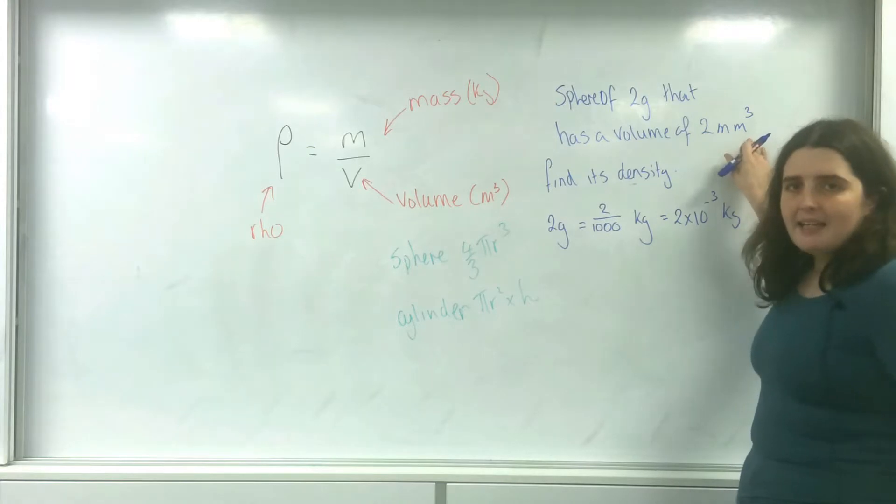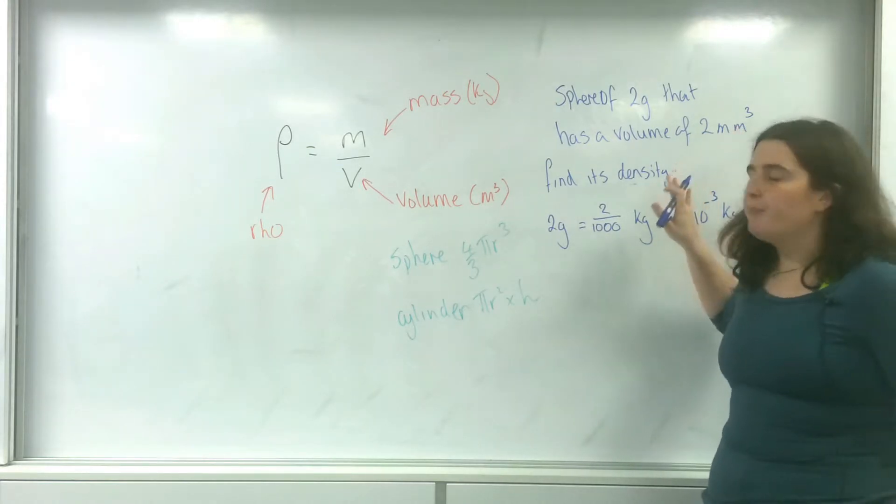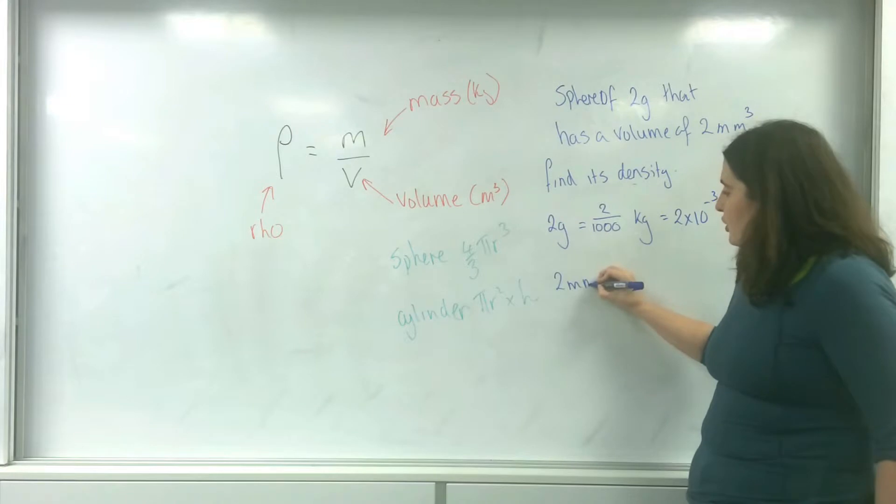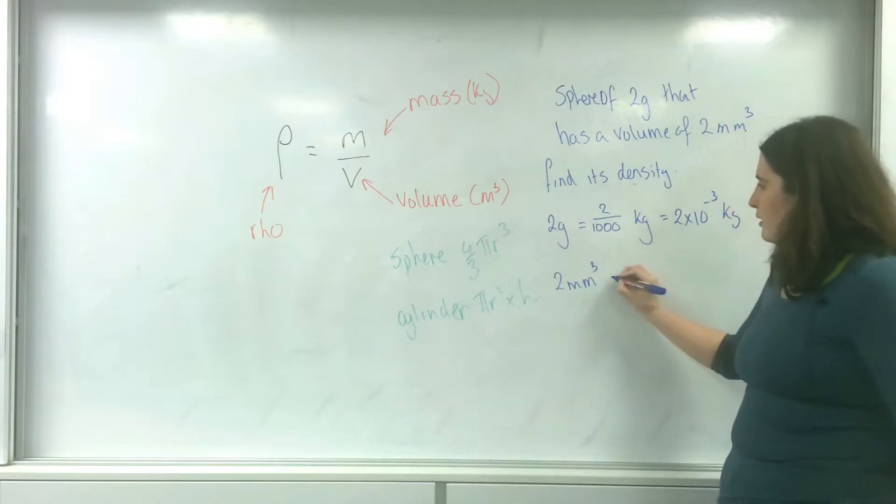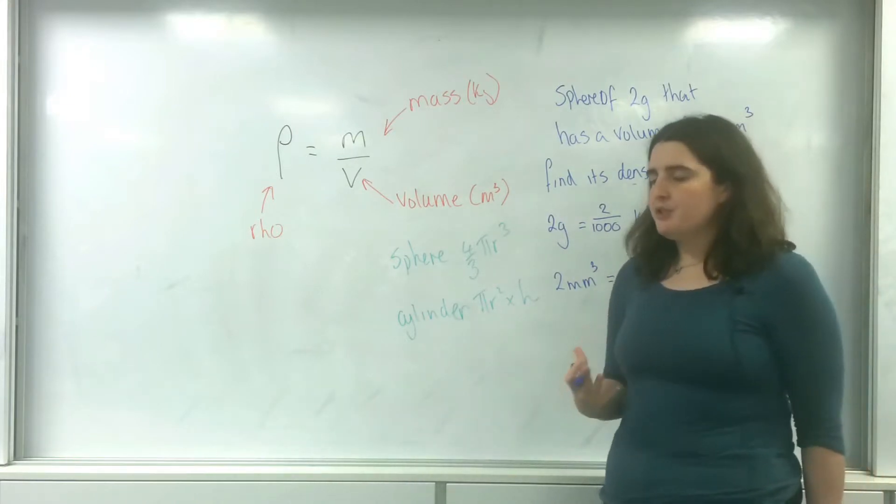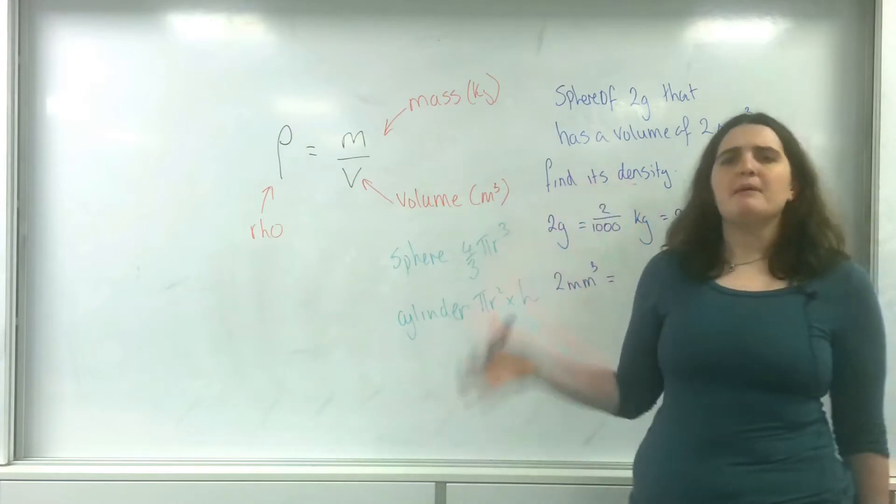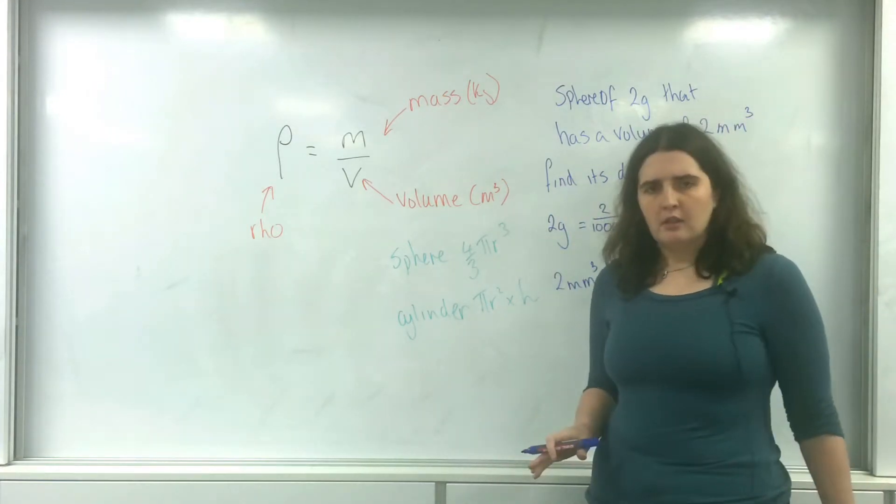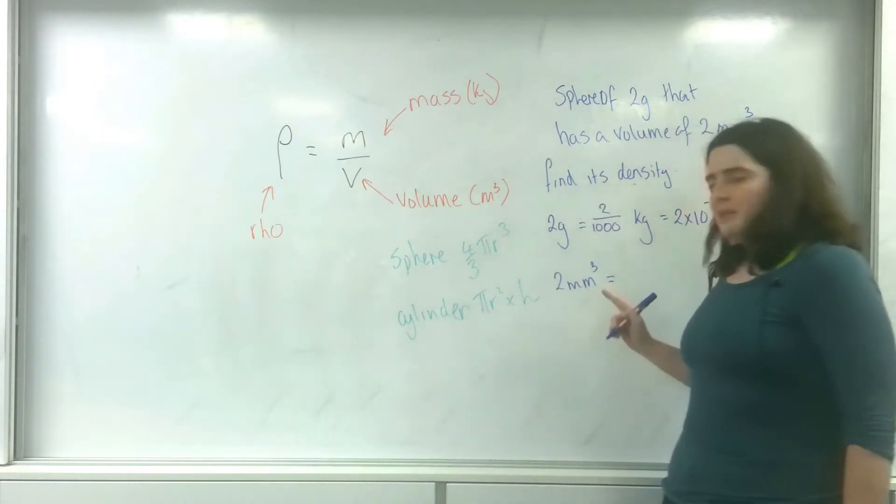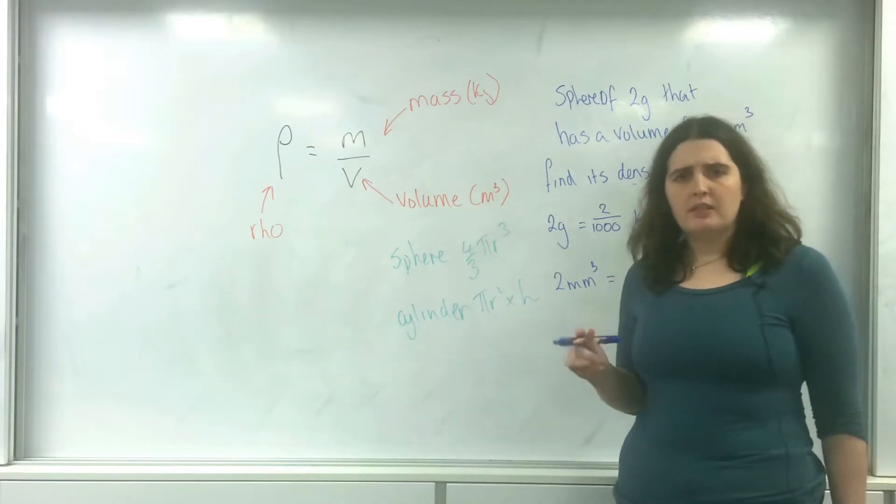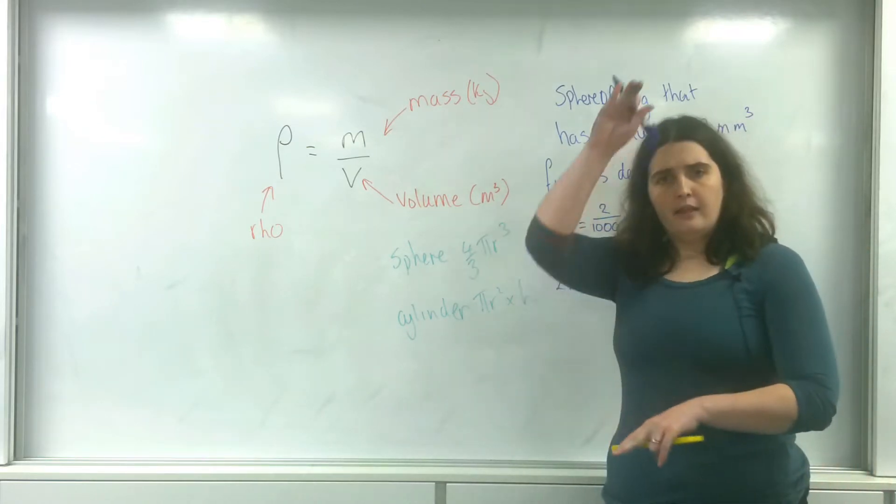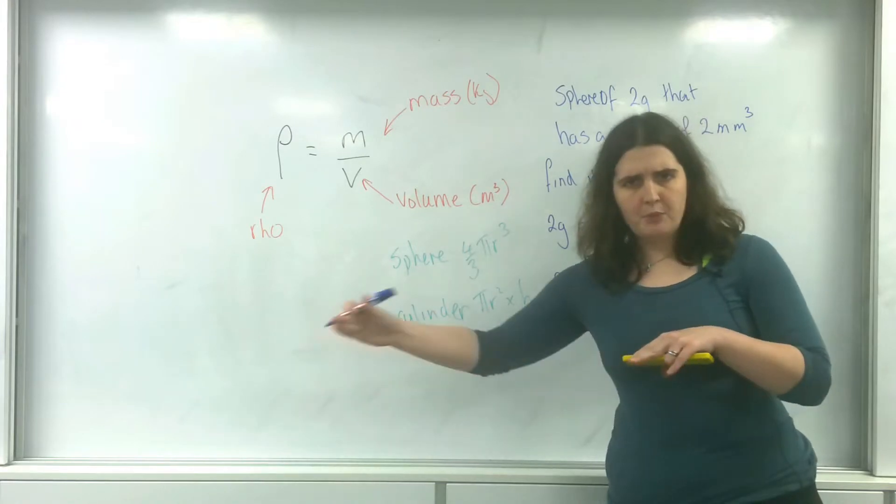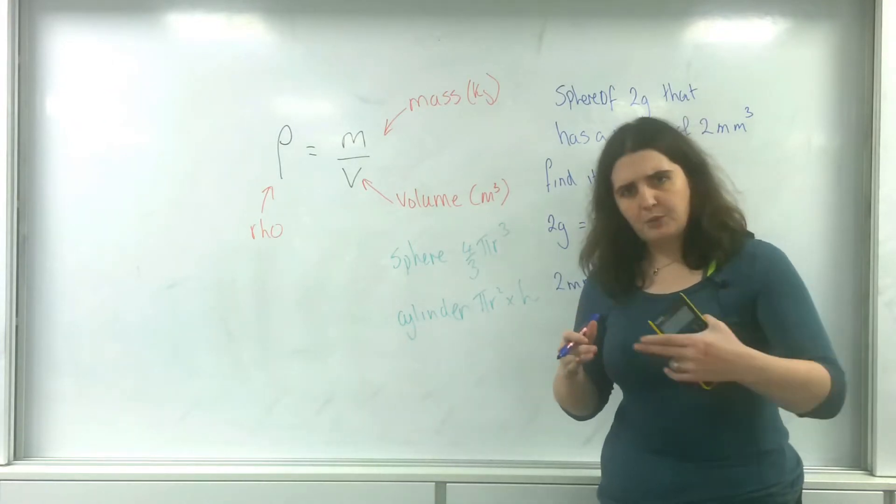Now this is the one that normally is the problem. 2 millimeters cubed - this is the interesting thing. People would go, 'Oh, millimeters to meters, you divide by 1,000.' But this is millimeters cubed. This is divided by 1,000 this way, this way, and this way.